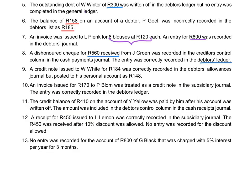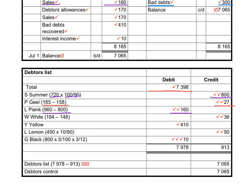A credit note issued to W. White for 184 rand was correctly recorded in the debtors allowances journal, so the control account will be correct. However, it was posted to his personal account as 148 rand. When we issue a credit note we credit his account; we should have credited it with 184 but only credited 148. Because we put too little on the credit side, we will credit his account with the difference of 36 rand to decrease his account to the correct balance.